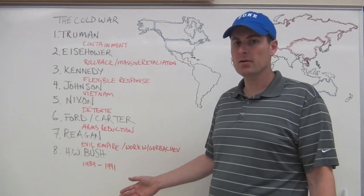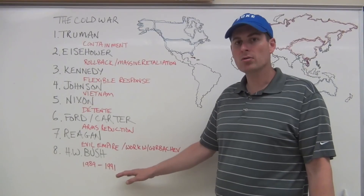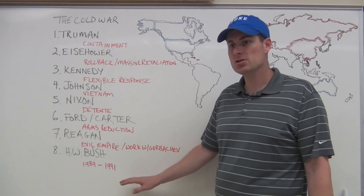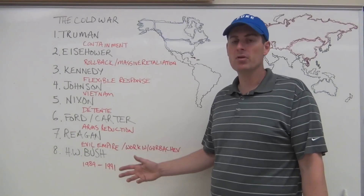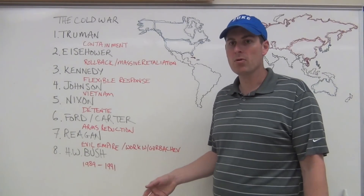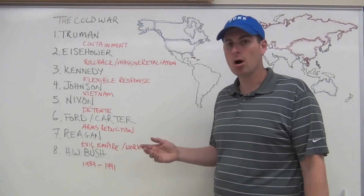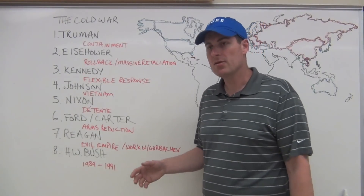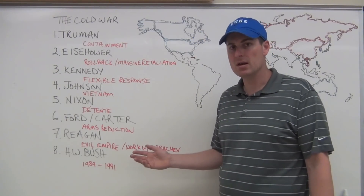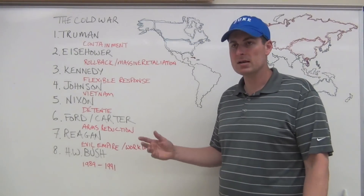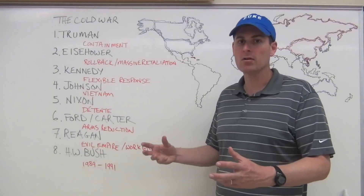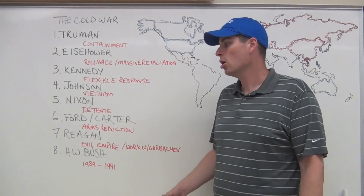In 1991, hardliners attempt a coup against Gorbachev while he is vacationing. The Soviet people stand up, led by Boris Yeltsin, who will later become president of Russia. The army refuses to stop them, and this becomes the effective collapse of the Soviet Union. It temporarily becomes the Commonwealth of Independent States and eventually breaks off into a variety of separate countries — the Soviet republics — with Russia by far the largest.